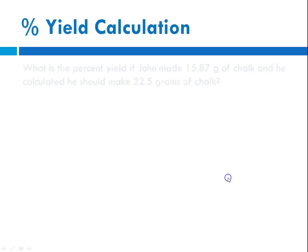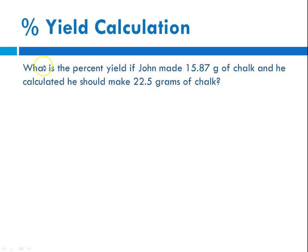So here's a sample calculation. We're repeating the question, what is the percent yield if John made 15.87 grams, and he calculated he should make 22.5. So his theoretical is what he calculated, 22.5. His experimental is what he actually got, 15.87.